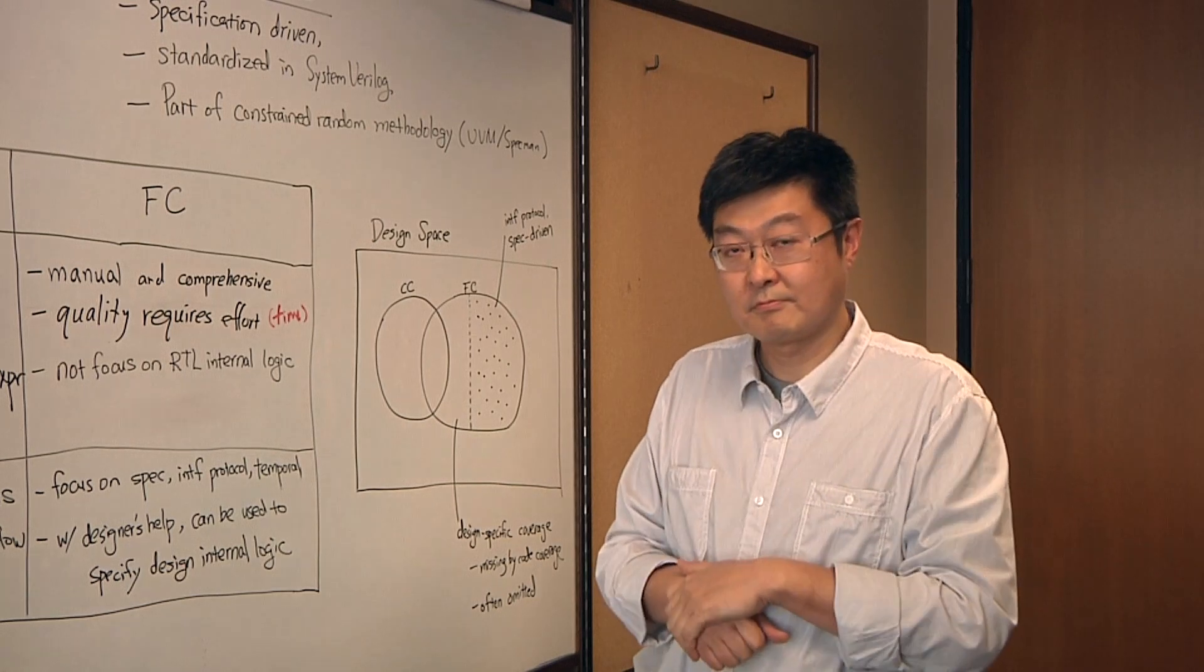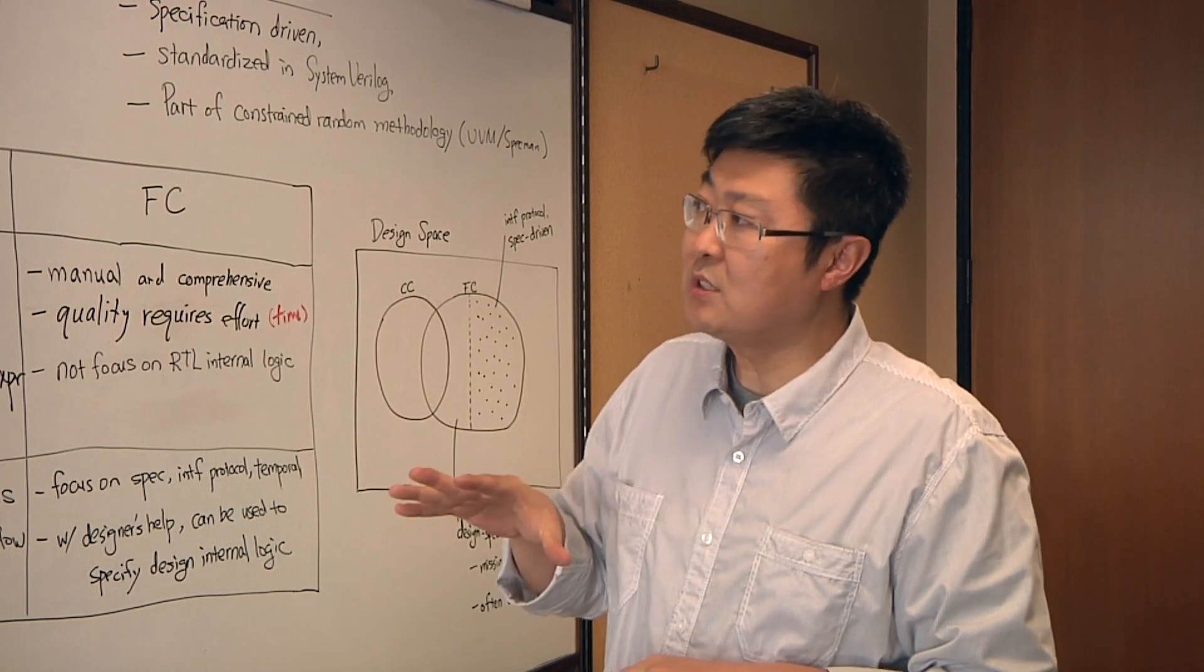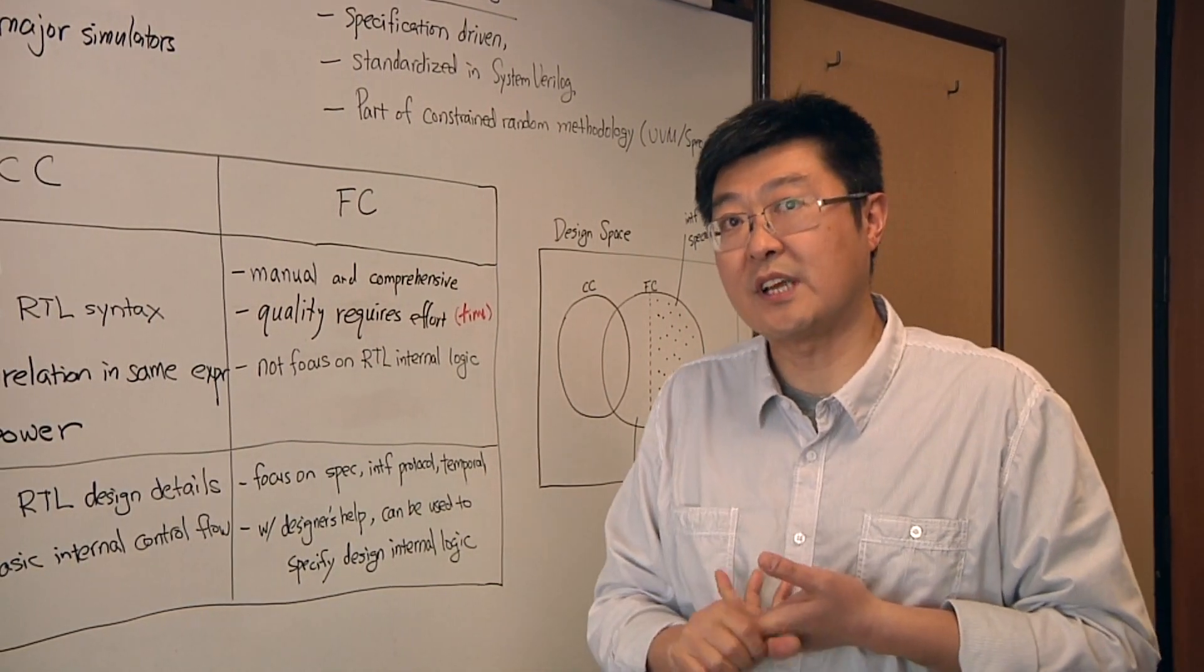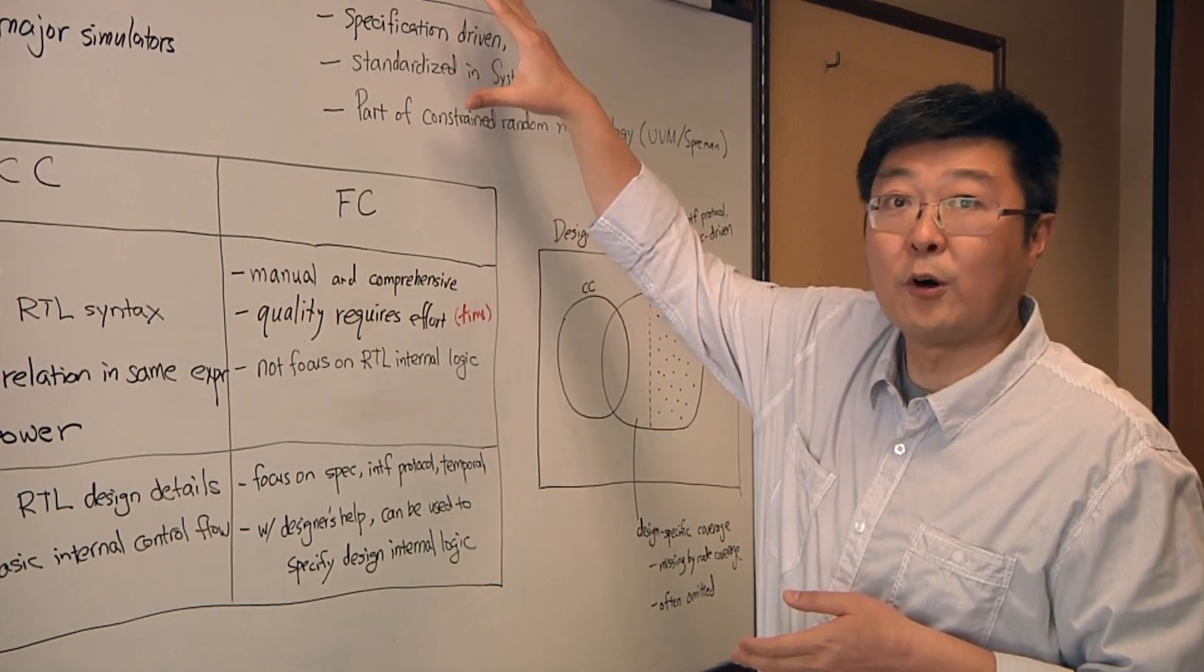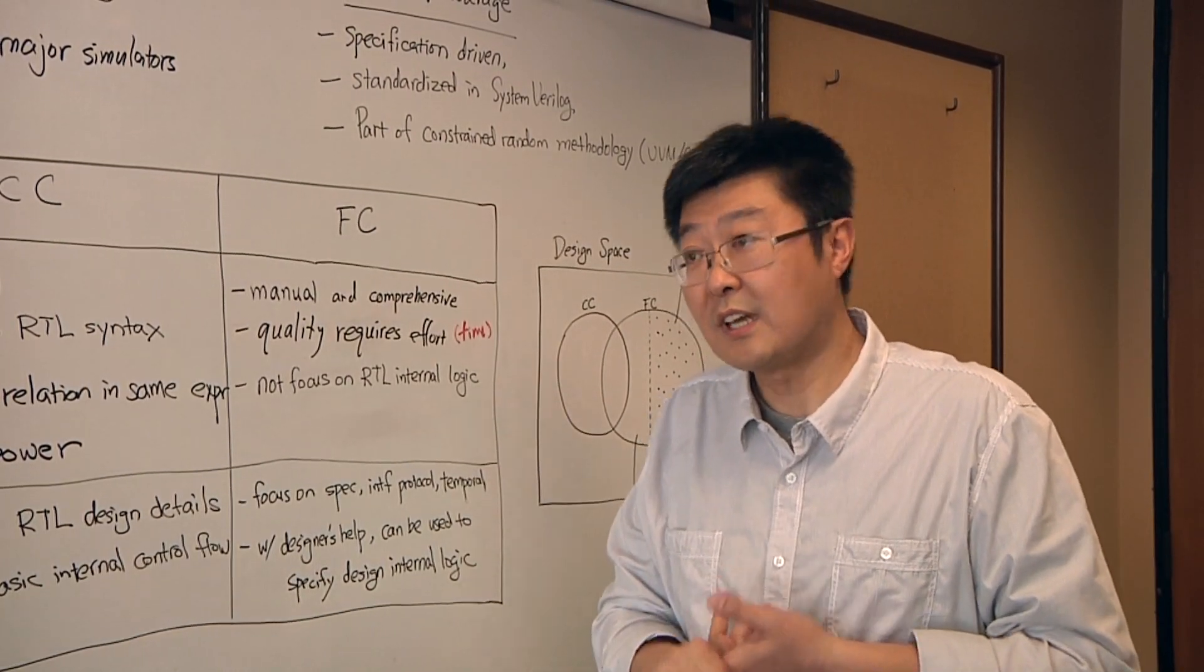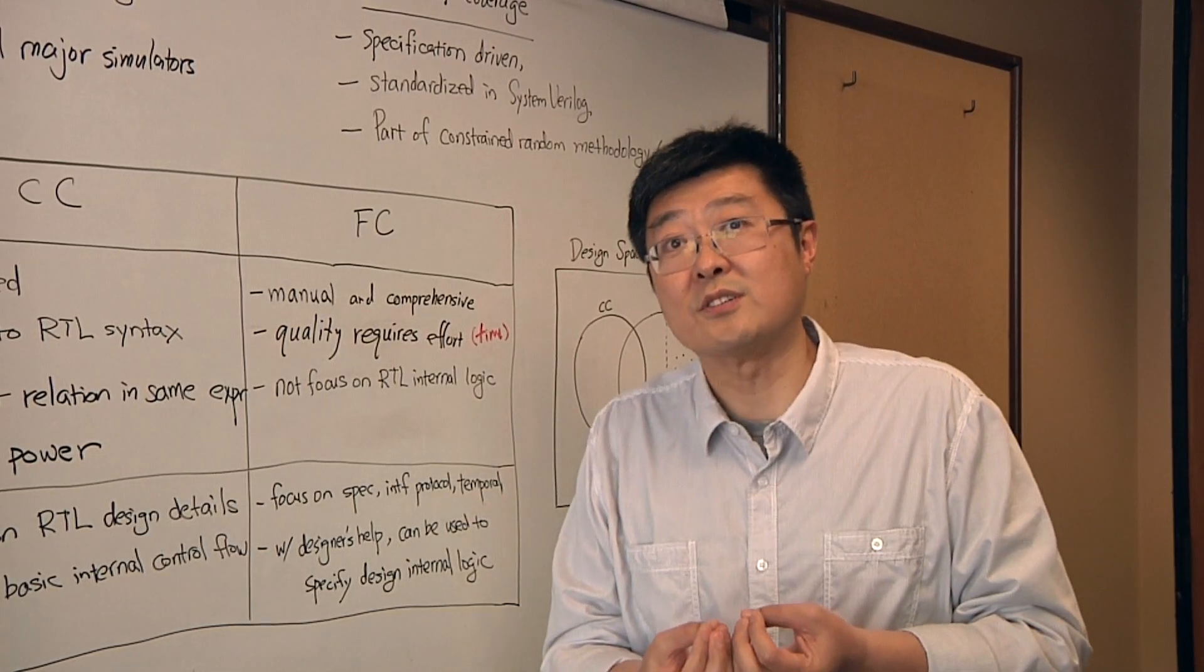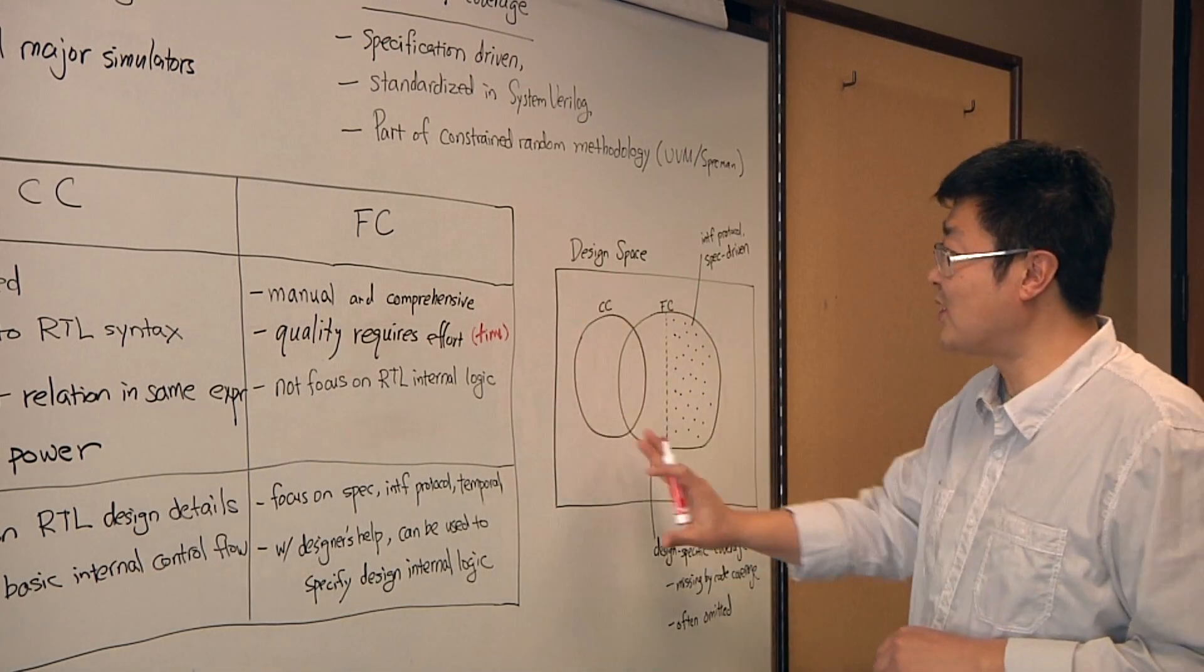So these are two pieces of it. What happens to assertion coverage? Where does that fit in? That's a very good question. Assertions became a standard not long ago. We have the PSL standard as well as the SystemVerilog assertion standard. In this standard, assertions fall into the functional coverage part of it, because they're also manually written. They can describe interface protocols as well as temporal behaviors.